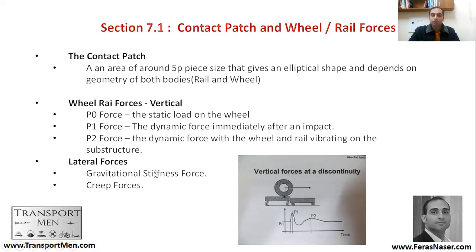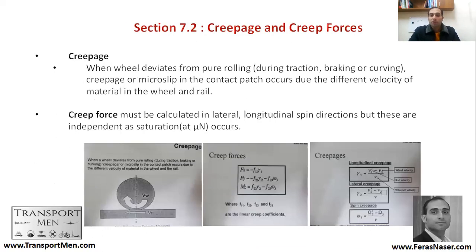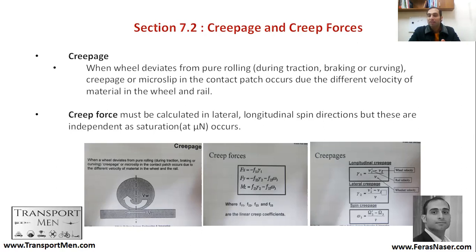For the lateral forces, we have creep forces and gravitational stiffness force. Creep force is a force where the wheel can slide to the right or left side — we call it a lateral force because it happens not so much because of rotation, but because of slippage. It can happen on a micro level. The wheel is rotating in one direction, and you have creepage force happening to the side, possibly in both lateral and longitudinal directions, but not the vertical. When a wheel deviates from pure rolling during traction, braking, or curving, creepage or micro-slip in the contact patch occurs due to different velocities of material in the wheel and rail.